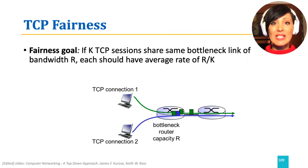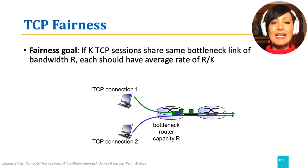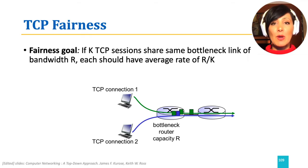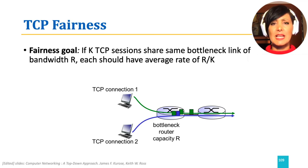An important characteristic that follows TCP's congestion control behavior is TCP fairness. Fairness means if k TCP sessions share the same bottleneck link of bandwidth R, each should have an average rate of R divided by k. But is TCP fair? And if yes, why?